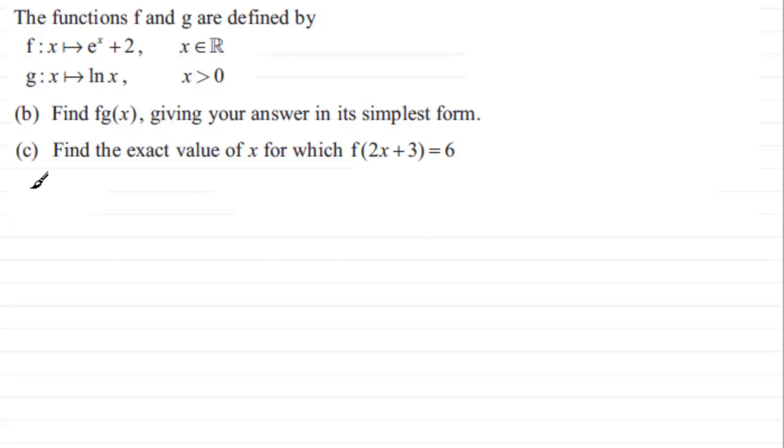Okay, so let's start with part b. First of all we've got to combine these two functions fg of x. It doesn't mean f of x multiplied by g of x, it just means we're doing f of whatever g of x was. Well, g of x is the natural log of x, so we just need to put that in there.